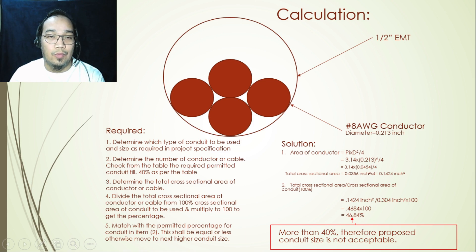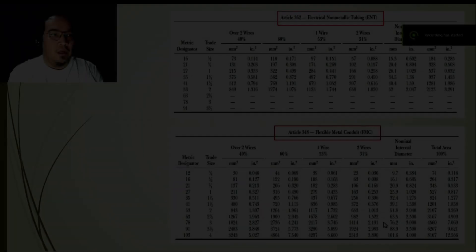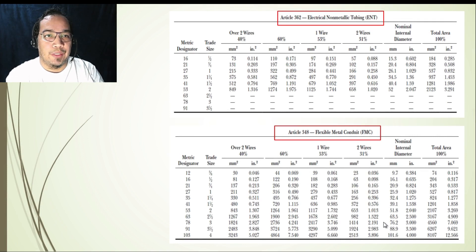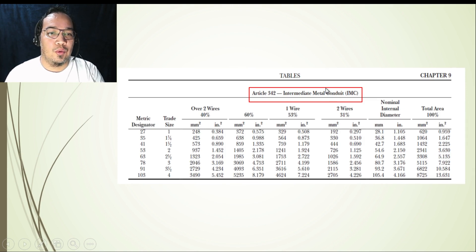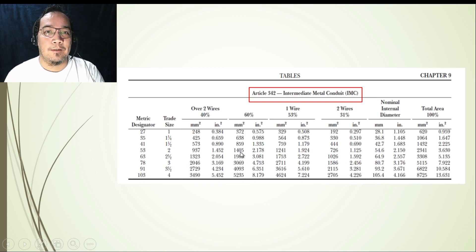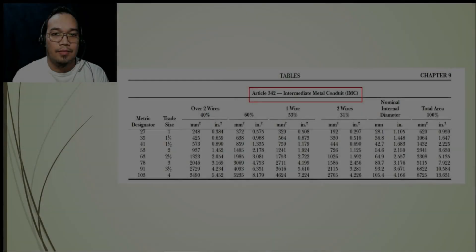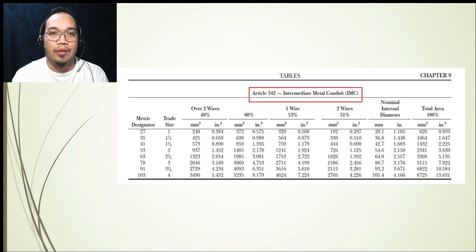So instead of 1/2 inch, we would use 3/4 inch conduit. For other types of conduit such as PVC or flexible metal conduit, we use the table specific to each conduit type. There is also a table for IMC conduit. The same procedure applies for all conduit types. That sums up today's topic — if you have any questions, leave your comments below and don't forget to like and subscribe. Goodbye!